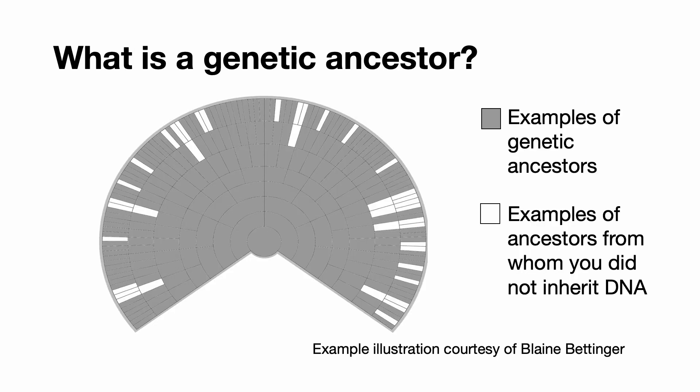So what is a genetic ancestor? Well, we know what an ancestor is — it's someone who came before us in our tree, one of our direct forebears. A genetic ancestor is someone who is not only an ancestor but also someone where you've been able to verify that you definitely seem to have inherited DNA from them.